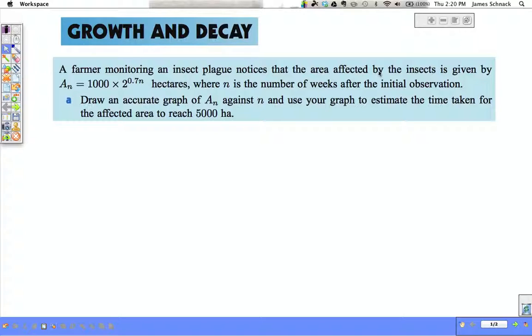In the exponents chapter, we had to take an equation like this one here. We could graph it and then find where it intersects the horizontal line 5,000. Well, now with our ability to use logarithms, we don't need to do that. We don't need to draw an accurate graph of A sub n and use the graph to estimate. Waste of time.